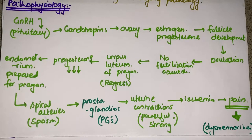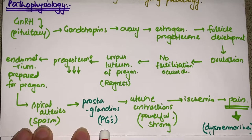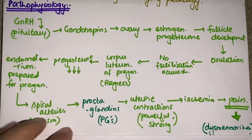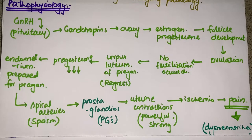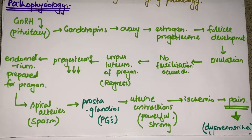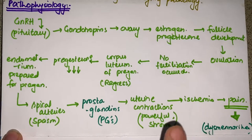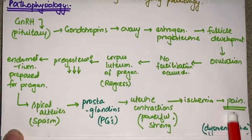As the endometrium regresses, the spiral arteries within it undergo spasm, which causes the release of prostaglandins. These prostaglandins play a major role in this disease — they cause the uterus to contract very strongly. With the arteries already in spasm and the muscle contracting forcefully, blood flow to the endometrial tissue is inadequate, causing ischemia, which results in pain — the hallmark of dysmenorrhea.